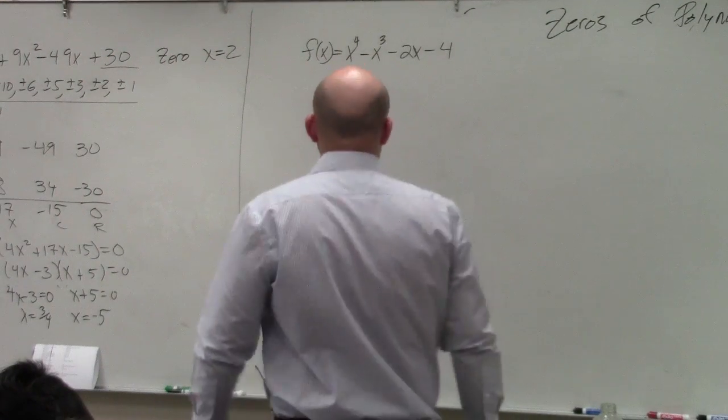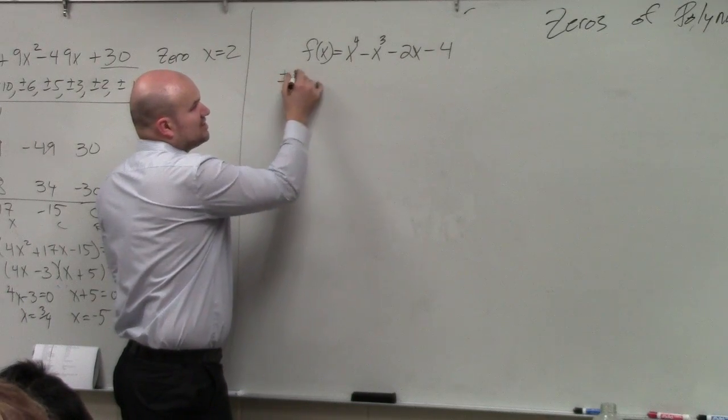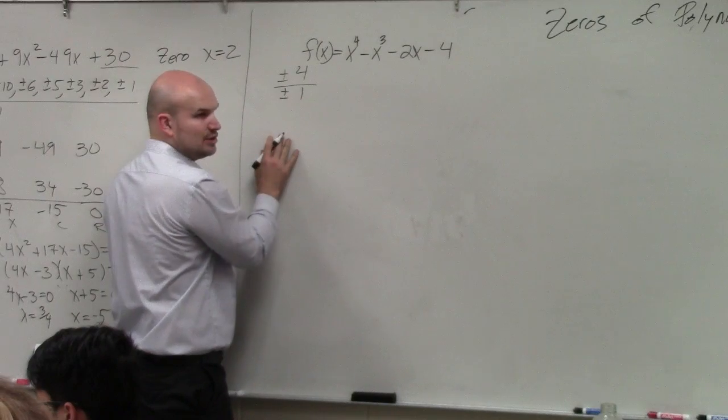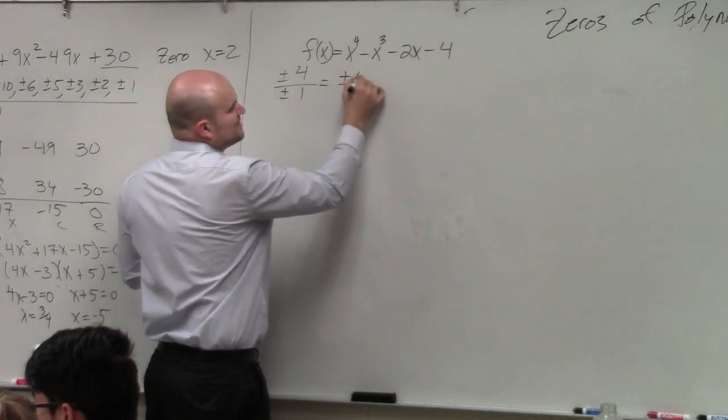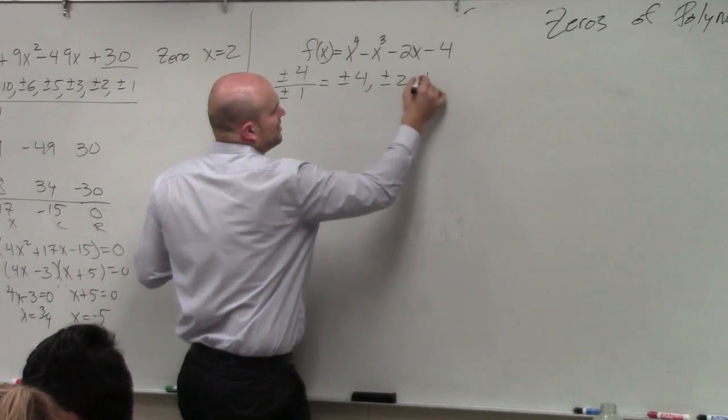In this example, first thing, let's just practice our rational zero test. Plus or minus the factors of our constant over plus or minus our factors of our leading coefficient, which is just 1. So really, this one's not bad. Plus or minus 4, plus or minus 2, plus or minus 1.